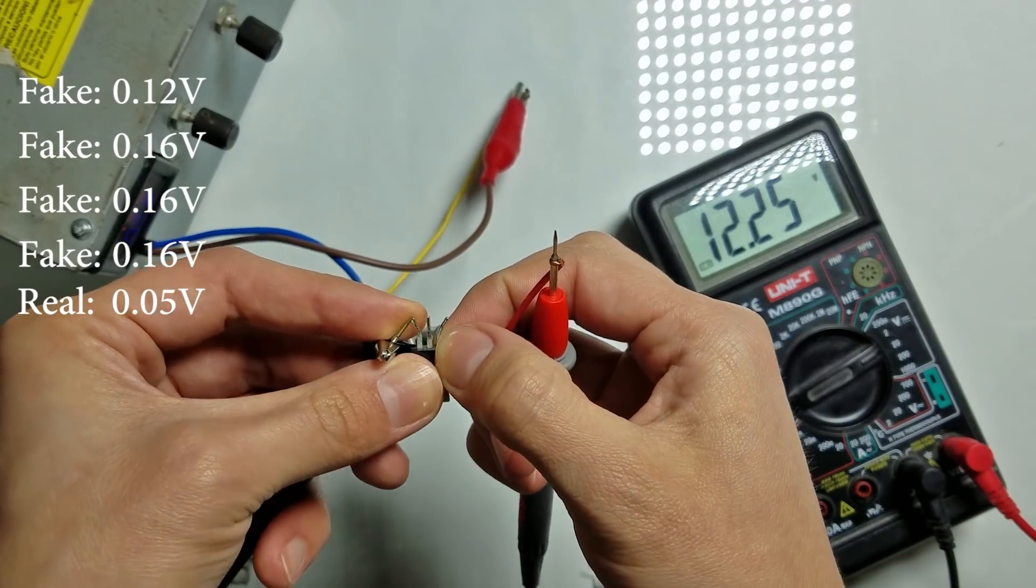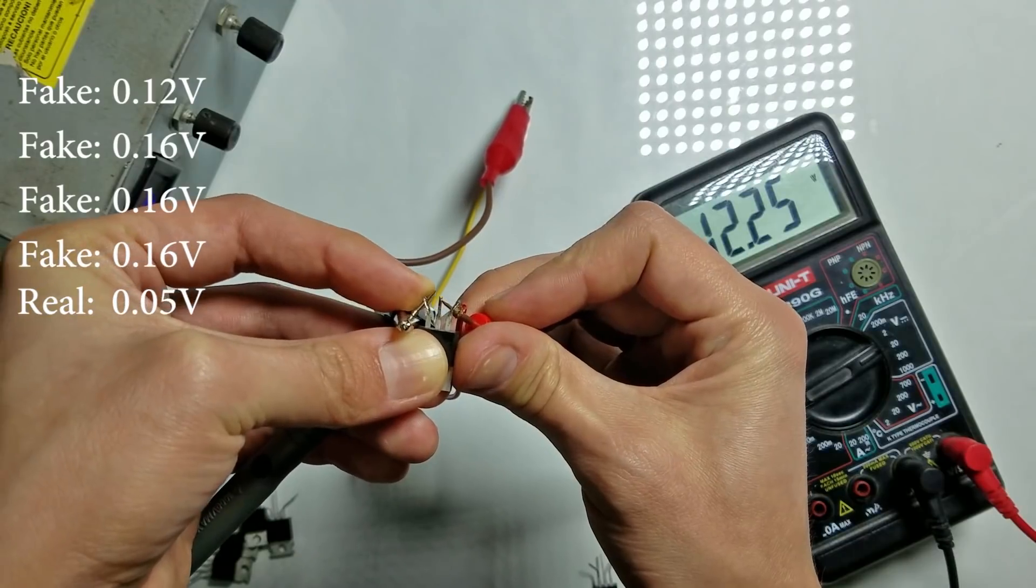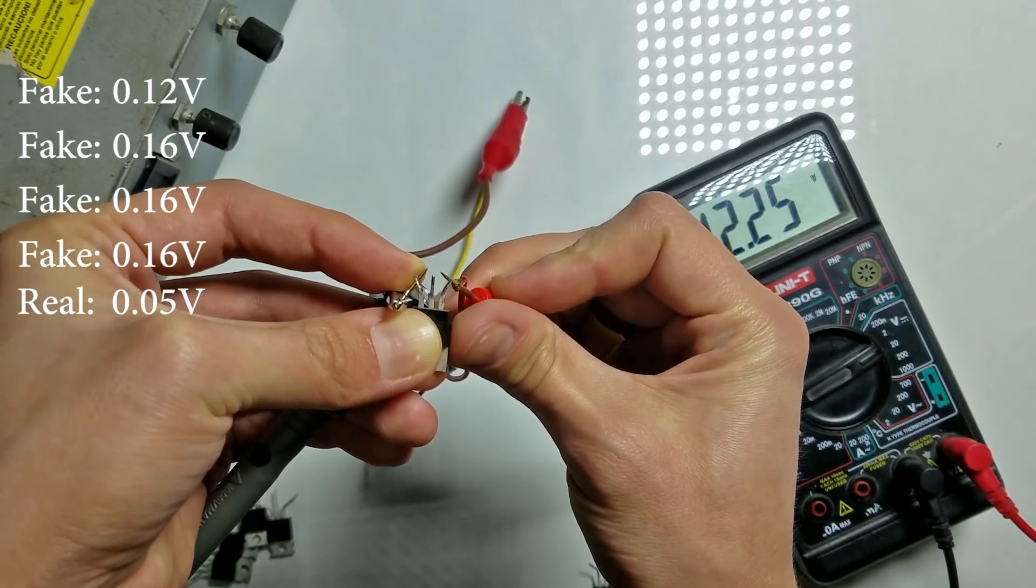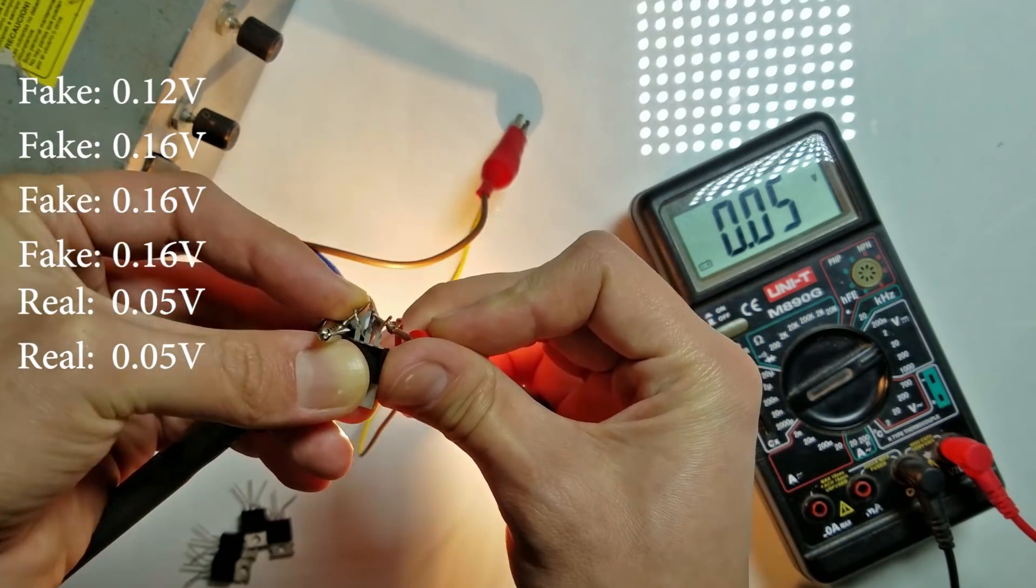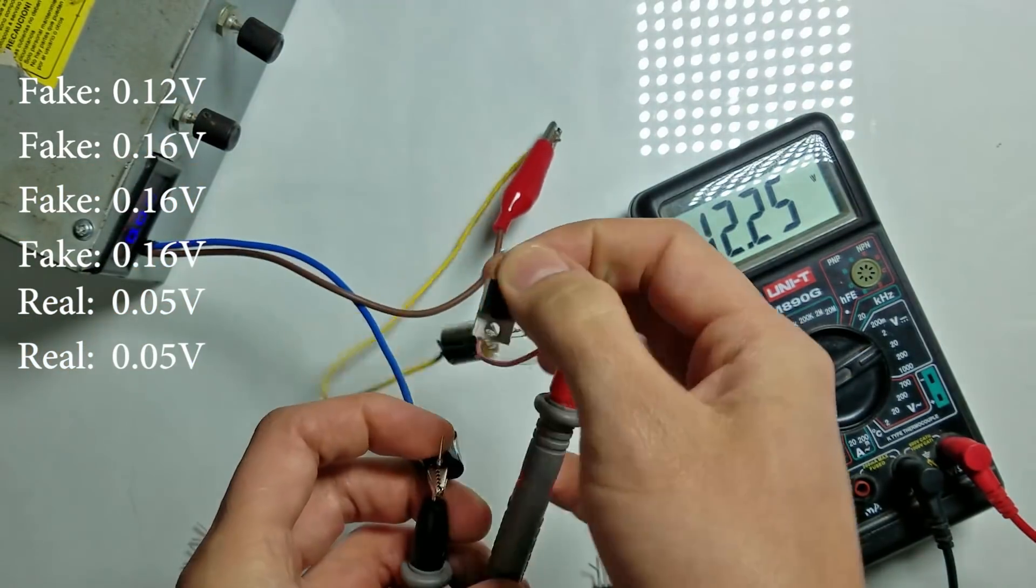Let's try one more real MOSFET. And we have 0.05V as well.